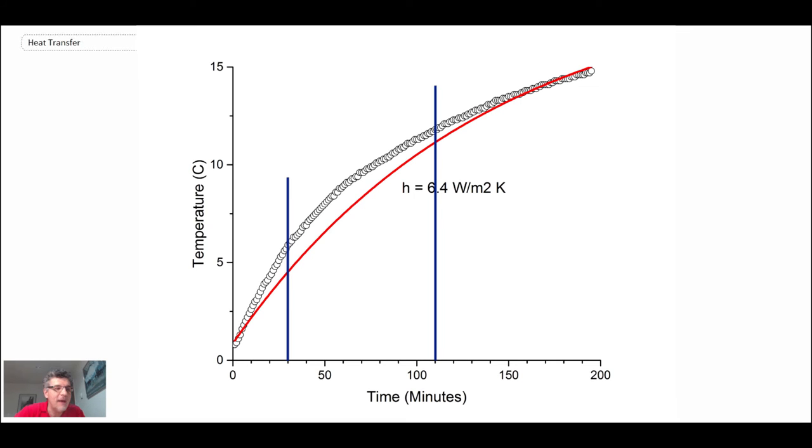It began at approximately 30 minutes and went all the way up to 110 minutes. In there, that is a strong indication that the lumped capacitance technique does not apply in that region. That's probably also why it's hard to fit the curve, as shown by the difference between the raw data and the red curve, which shows the results assuming the convective heat transfer coefficient was 6.4 watts per square meter Kelvin.